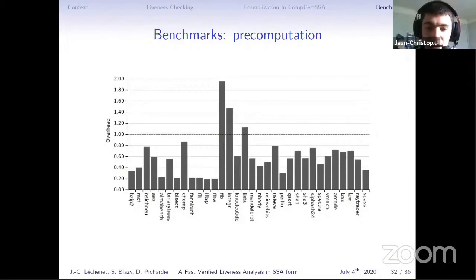Here is the result for the precomputation part. For the precomputation, we compare the precomputation of our approach with the standard analysis, which does more things. So we expect to be faster, but it's a bit biased because we compute less things. And indeed, these graphs show the time of our analysis divided by the time of the standard analysis. And since we are below one, we are faster, but this is expected.